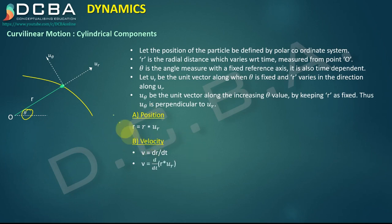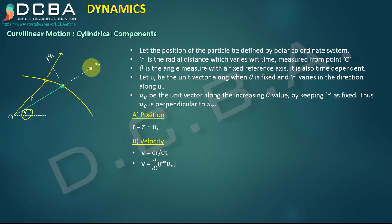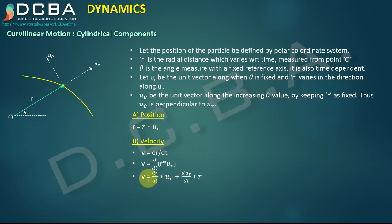Both r and ur are time-dependent: if θ changes, r changes and the direction of ur also changes. So when we take the derivative, we apply the product rule: v = (dr/dt)·ur + r·(dur/dt).